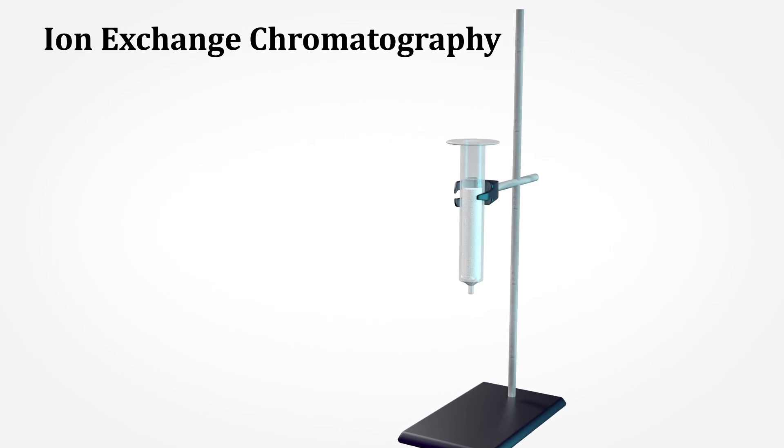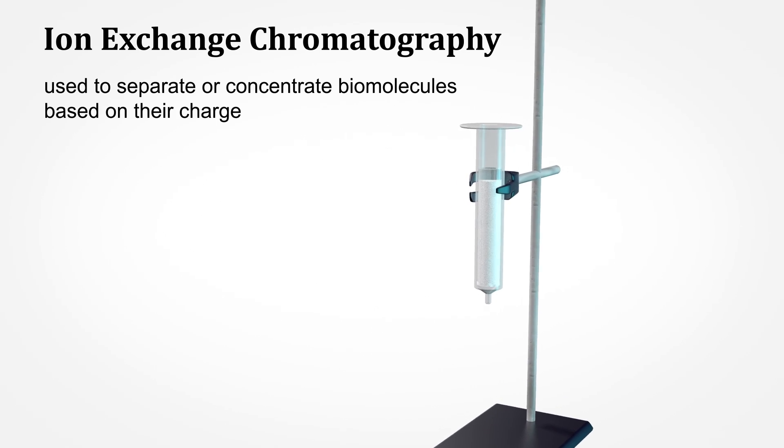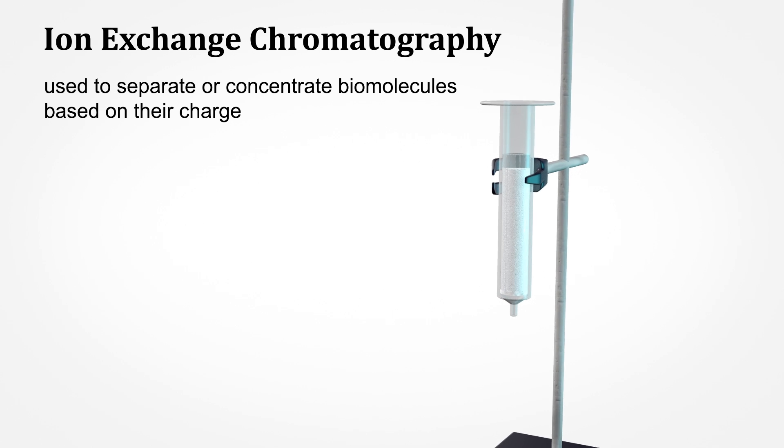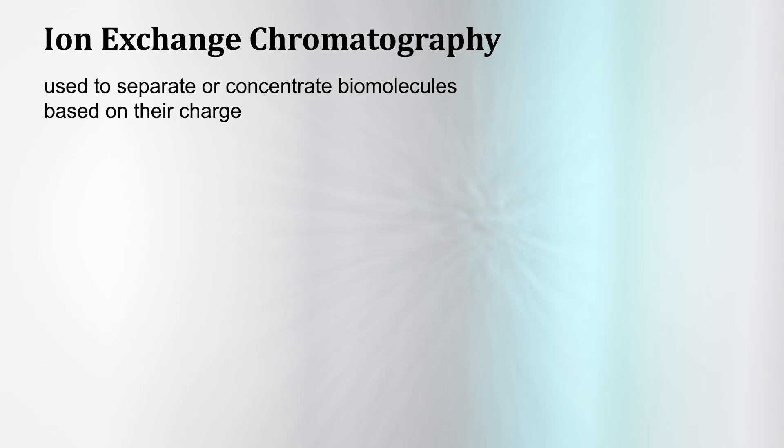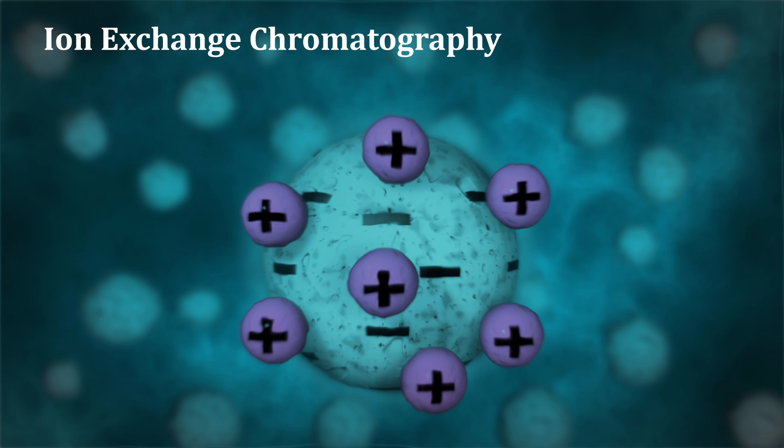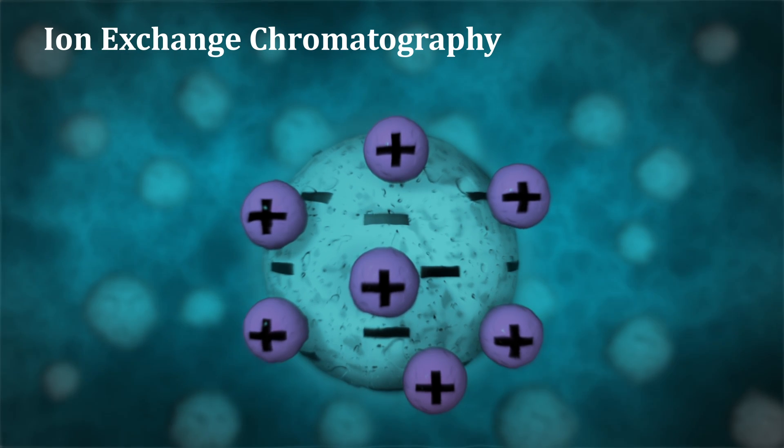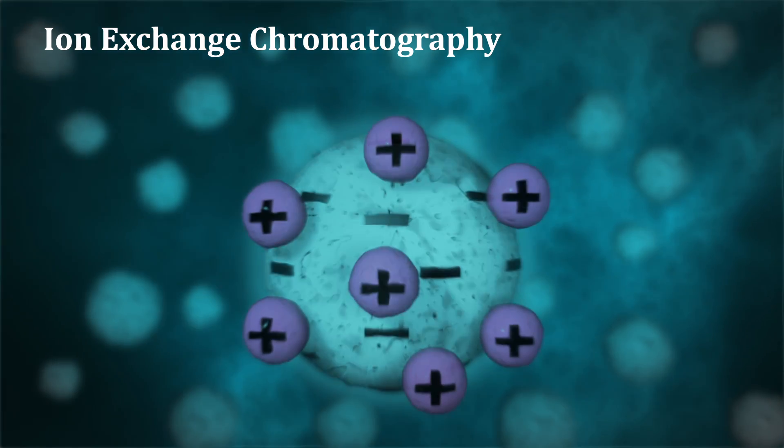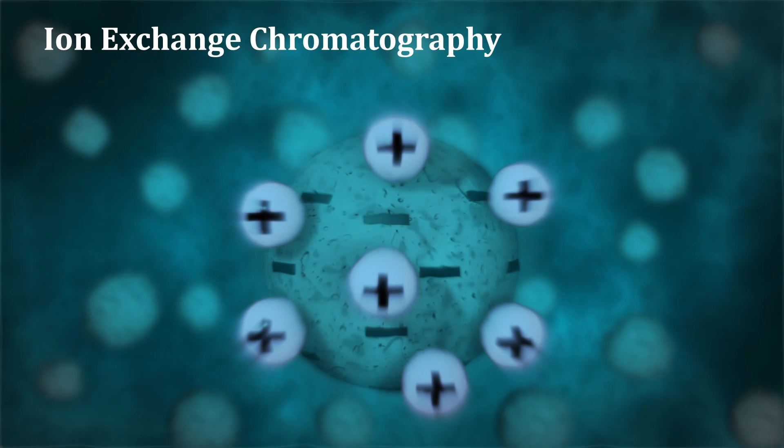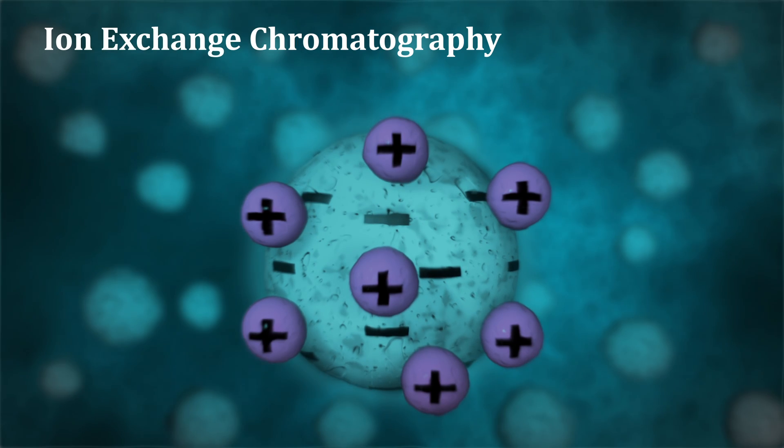Ion exchange chromatography is a method used to separate or concentrate biomolecules based on their charge. The stationary phase of an ion exchange column is a matrix which consists of insoluble charged polymers that contain loosely held ions that are exchangeable with the target molecule.